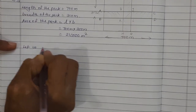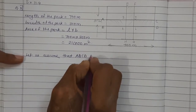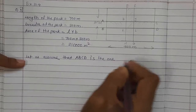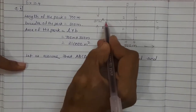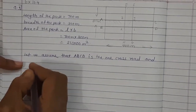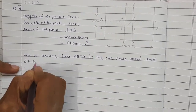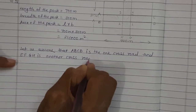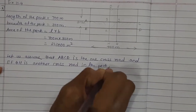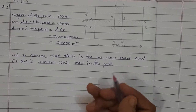So now let us assume that ABCD is one cross road and EFGH is another cross road in the park. Both these are the cross roads — ABCD is one of the cross roads and EFGH is another cross road in the park.